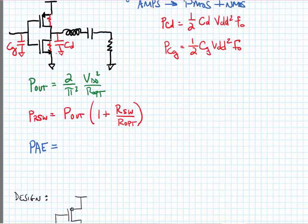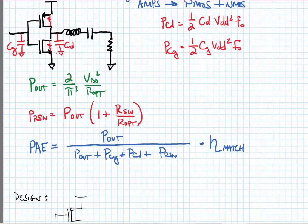With this we can now find the power added efficiency of the Class D amplifier. This is a metric that will take into account the output power divided by all the power that it takes in order to deliver the output power. So essentially what we've done is put all of our power consumption terms in the denominator and we've also multiplied this whole thing by the efficiency of the matching network.